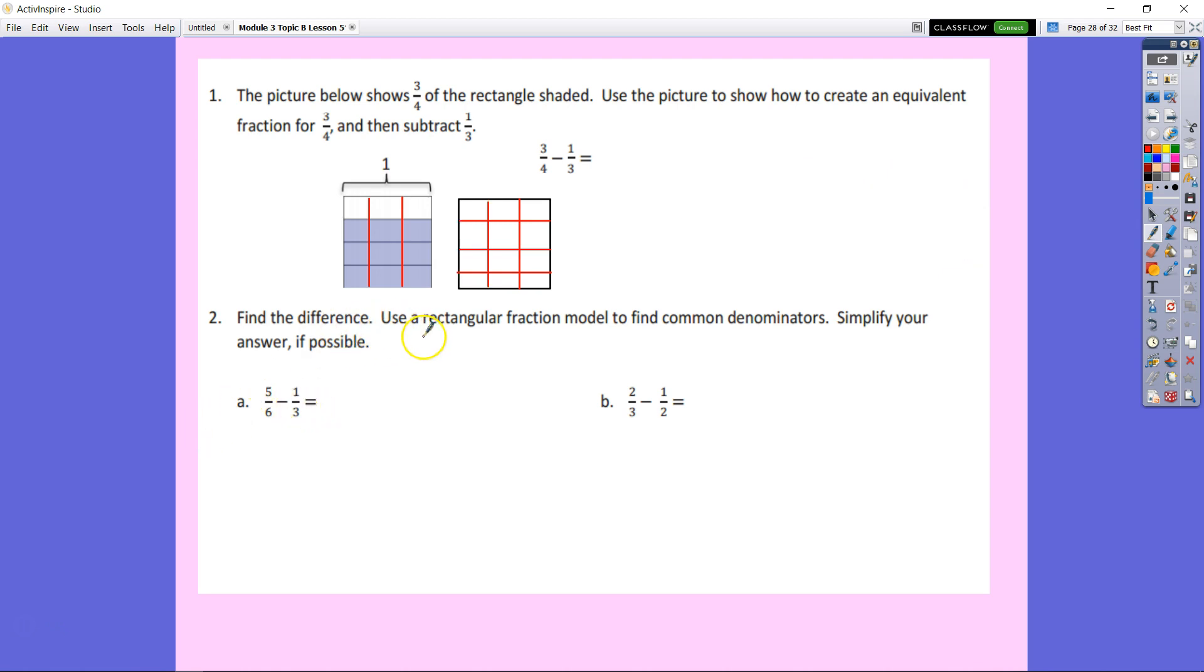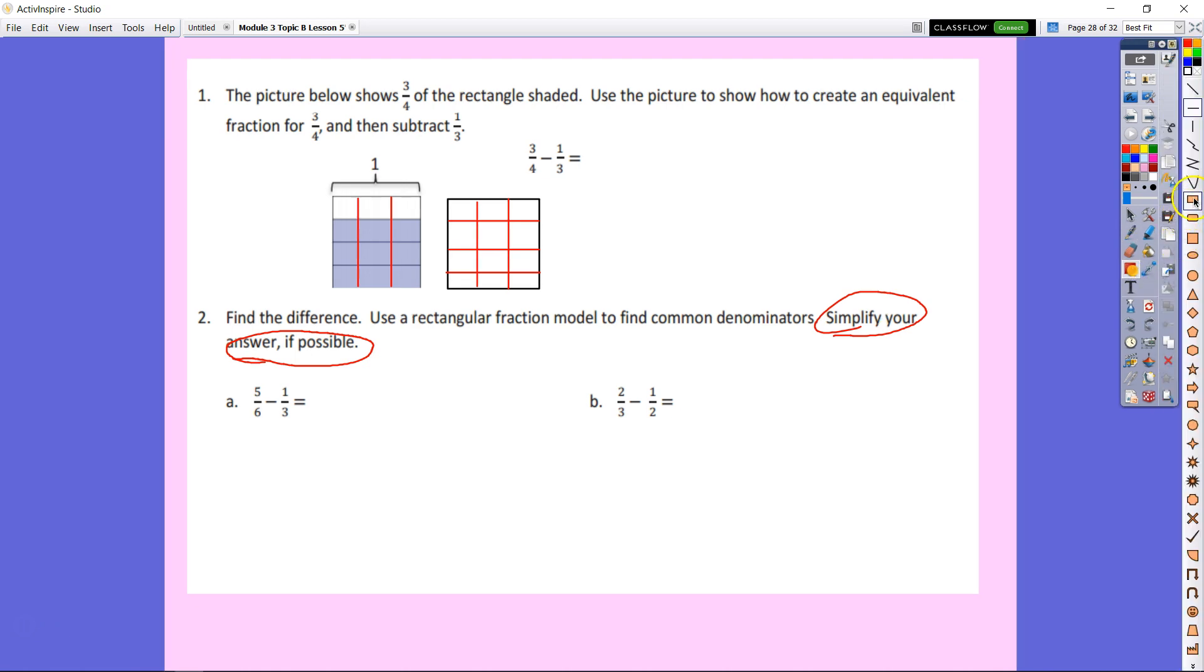Number two, it says find a difference. Use a rectangular fractional model to find common denominators. Simplify your answer, if possible. Now, that simplify your answer, if possible, is important, because if we don't simplify our answer, we're going to lose points. Find a difference, meaning they want us to solve. And then we have to use the rectangles, and then we have to simplify. So, it's three things that they're asking us to do. That's key. Let's do the rectangular model first, and it's just going to probably be a large part of the points. I'm going to do my vertical lines first. We got six. We need five lines.